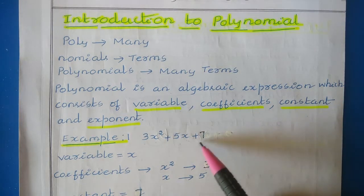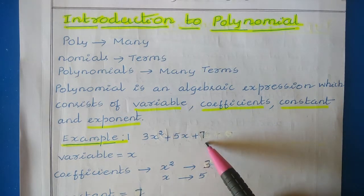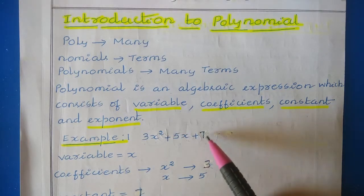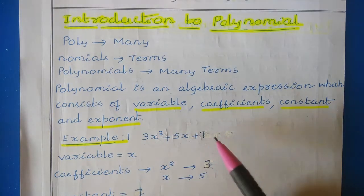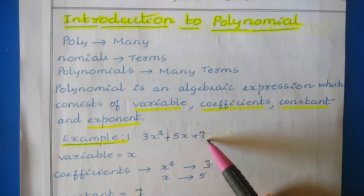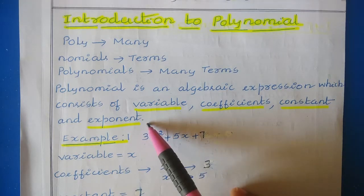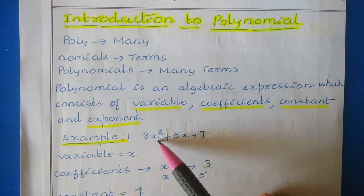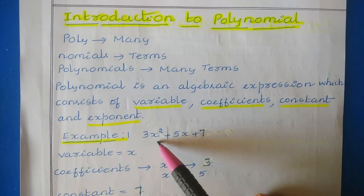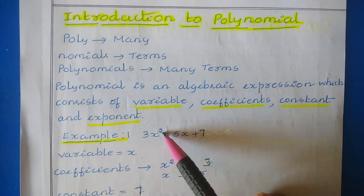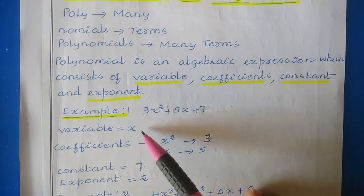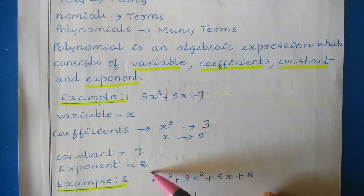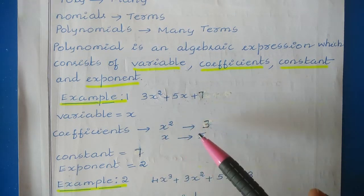The constant is the final value where no variable is written — here it is 7, which stands alone, so we call it a constant. The exponent is the power of the variable: since x is the variable and we have x², the exponent of x is 2. By this way we can have a polynomial.